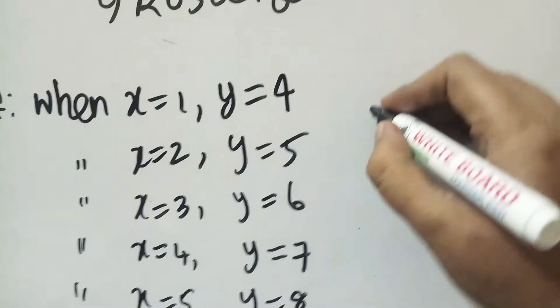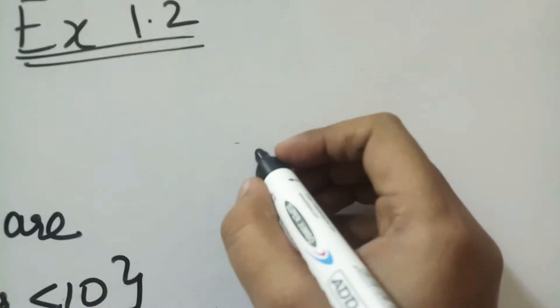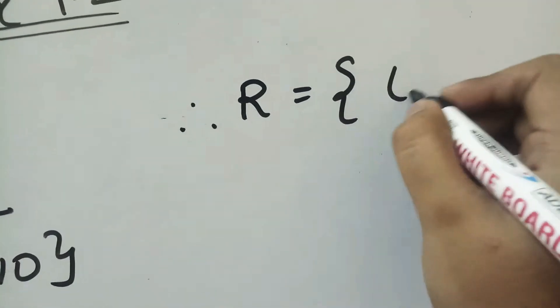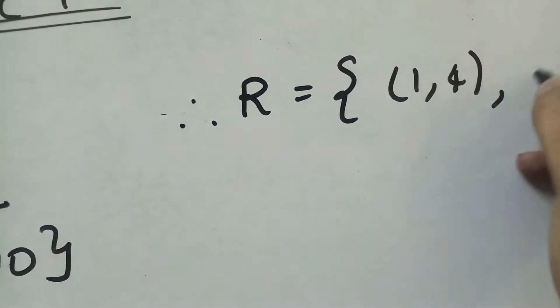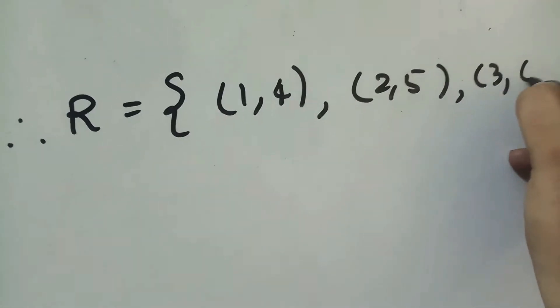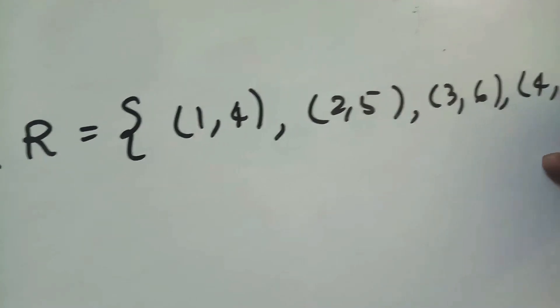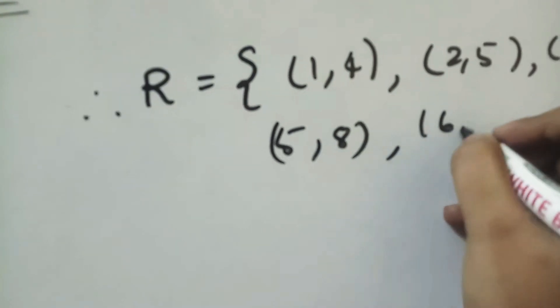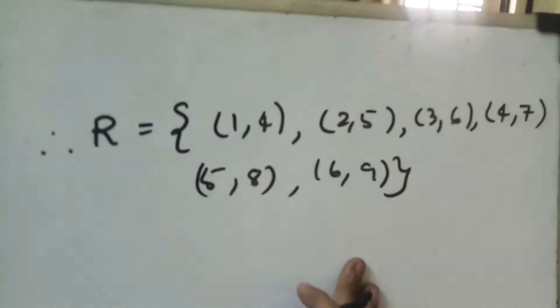So therefore, R is equal to (1,4), (2,5), (3,6), (4,7), (5,8), (6,9). This is our relation R.